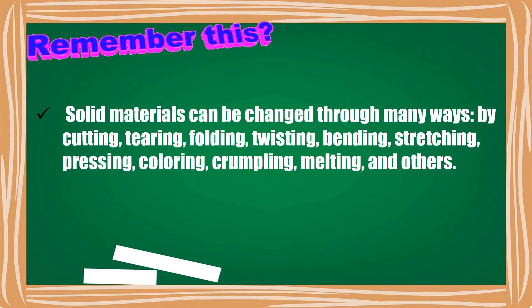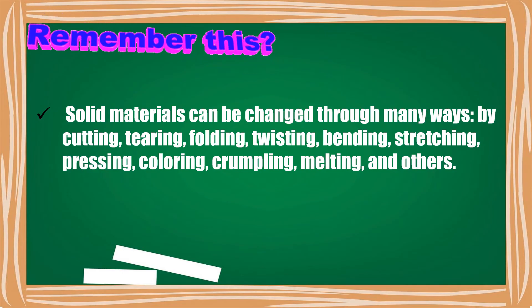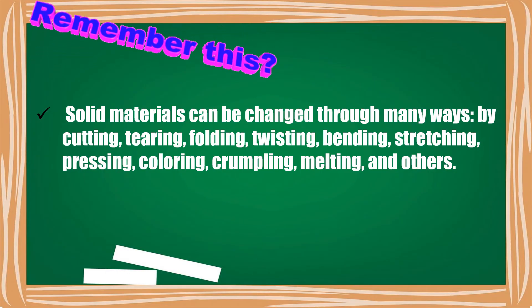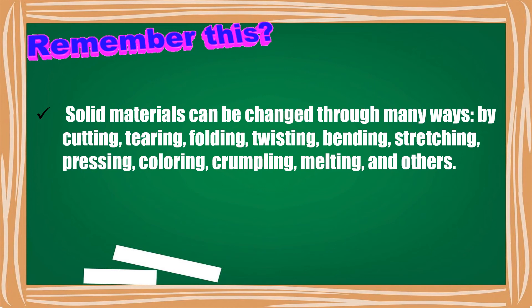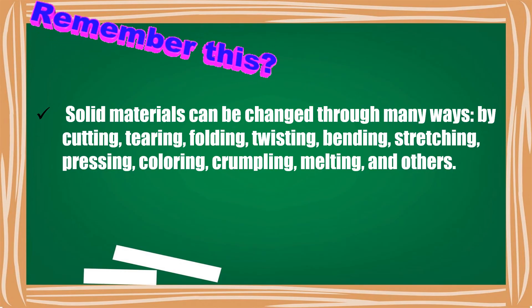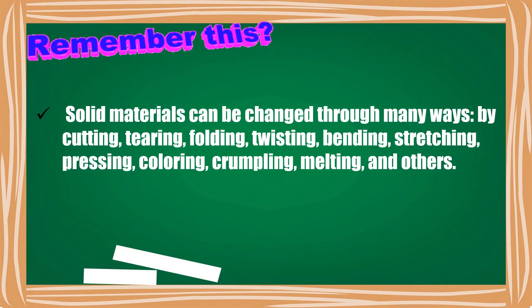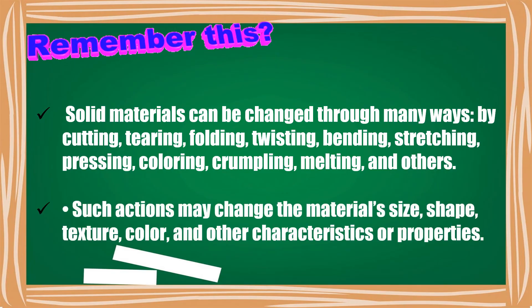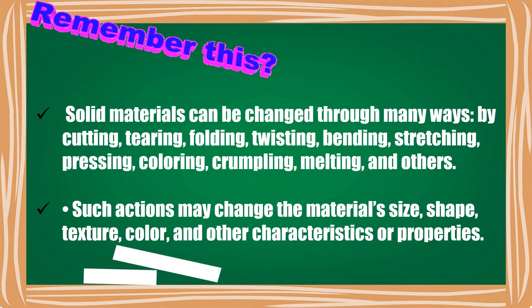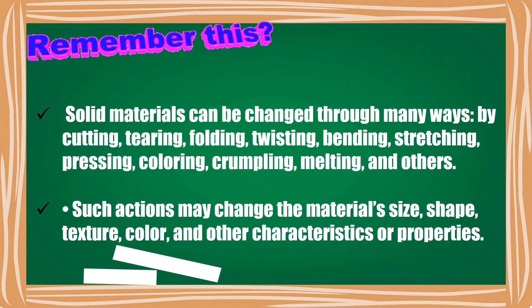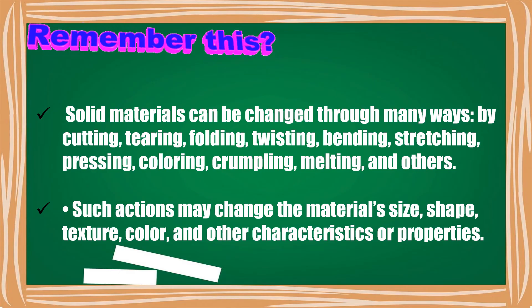Solid materials can be changed through many ways by cutting, tearing, folding, twisting, bending, stretching, pressing, coloring, crumpling, melting, and others. Such actions may change the material size, shape, texture, color, and other characteristics or properties.